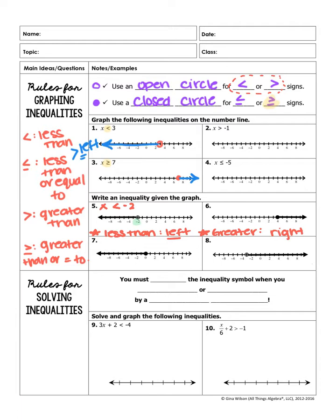For number 6, we always start with x and then either greater than, less than, or with or equal to. I can see the dot is at 4, so it has something to do with 4. The arrow is pointing to the right, so we have either greater than or greater than or equal to. The last thing is to check if the circle is colored in — and it is a closed circle. So we have greater than or equal to, and our inequality is x is greater than or equal to 4.